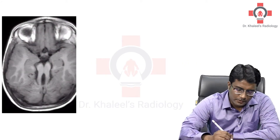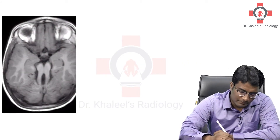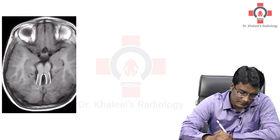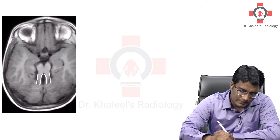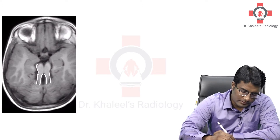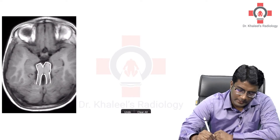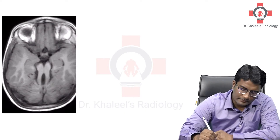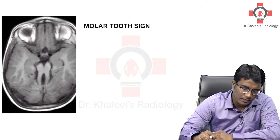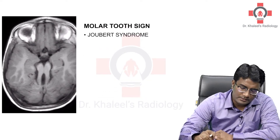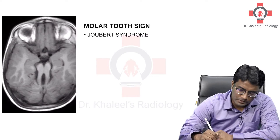In this image, you are seeing there are prominent cerebellar peduncles and also an interpeduncular fossa, along with elongated cerebellar peduncles. It gives the appearance of a molar tooth. So, molar tooth sign is a feature seen in Joubert syndrome.